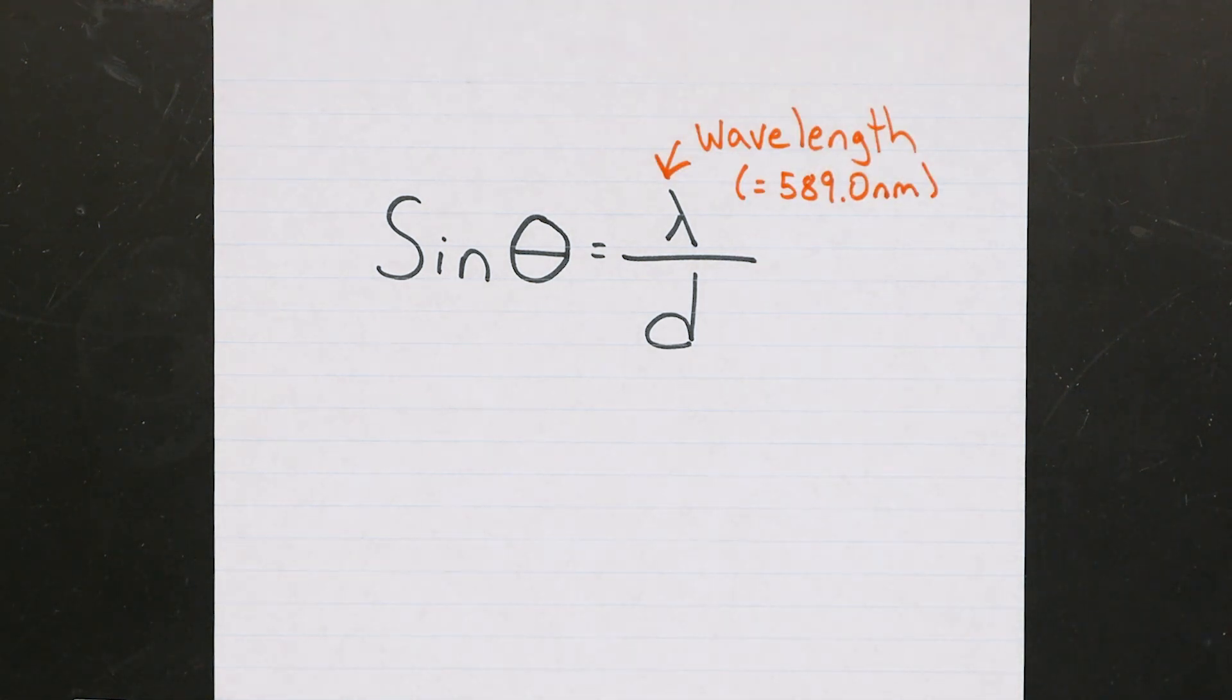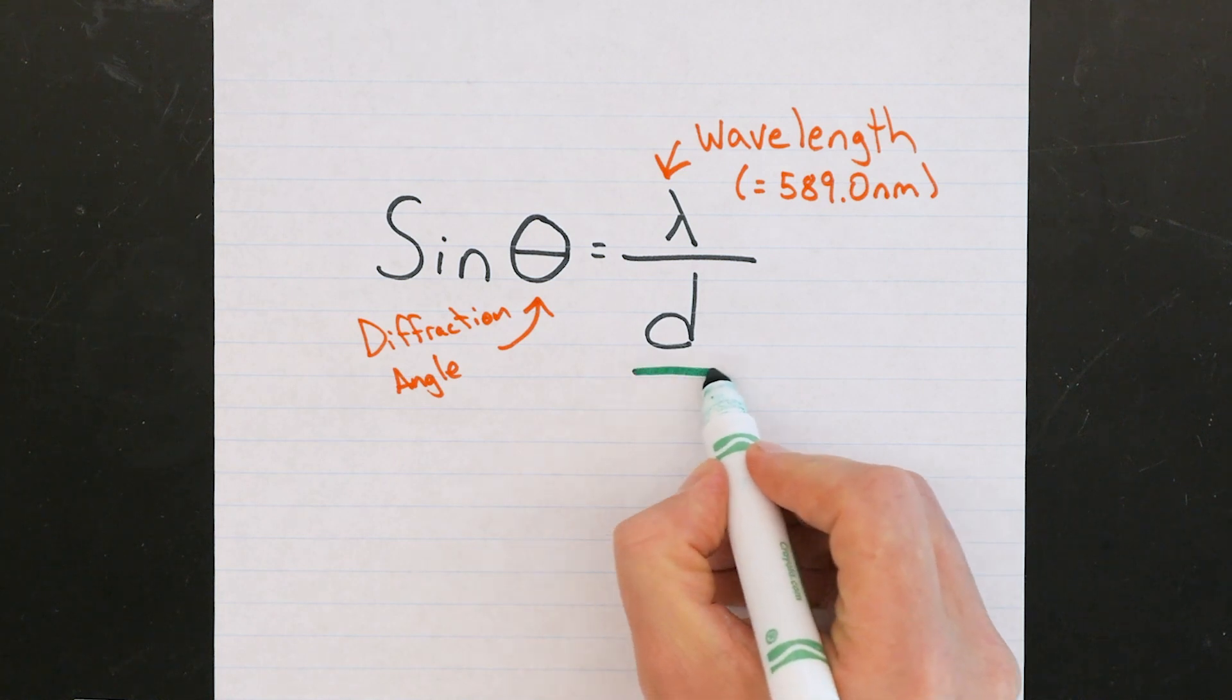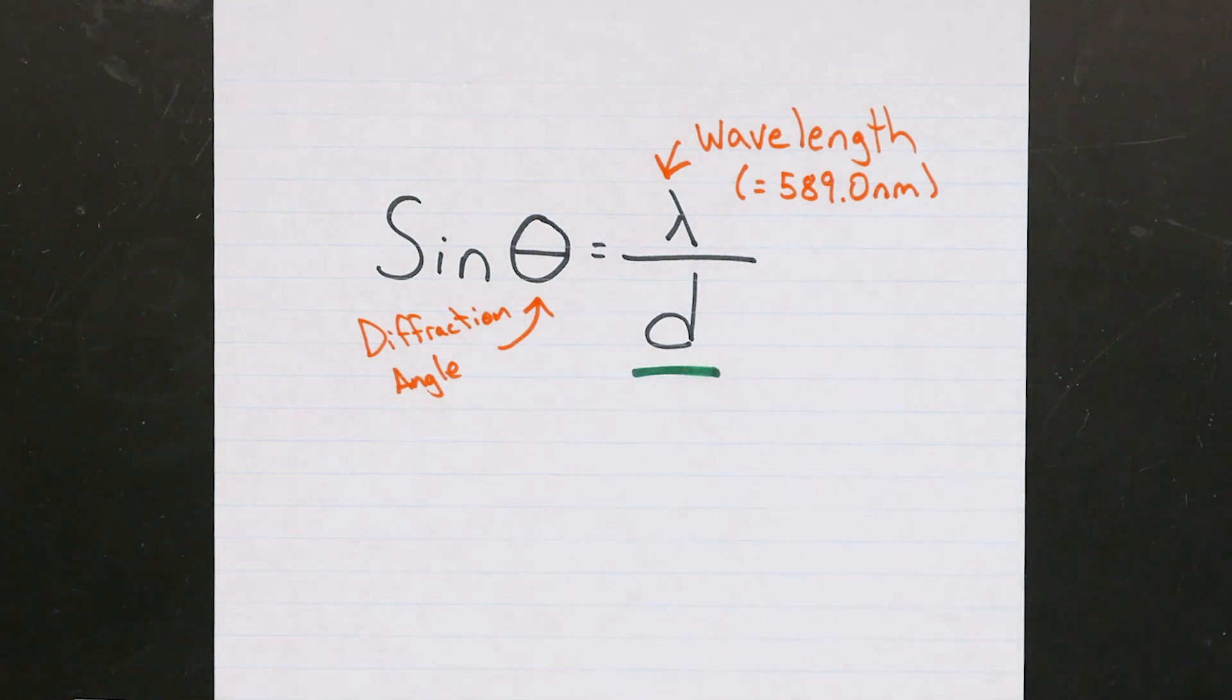You just measure the diffraction angle, and since you know that lambda has to equal 589 nanometers for this case, you can use this equation to figure out what your d value is, and you're ready to proceed. Now we can use that value to convert all of our future angle measurements into the other photon wavelengths. So let's get started.